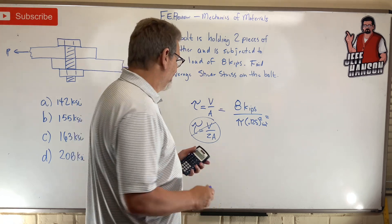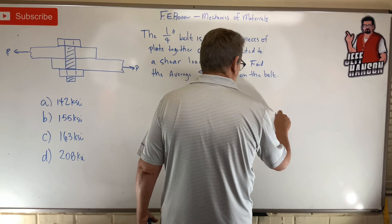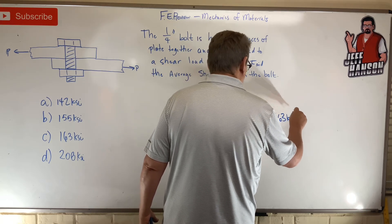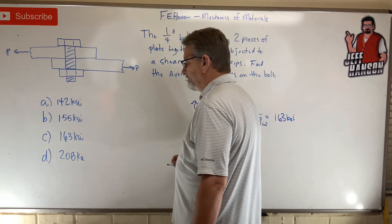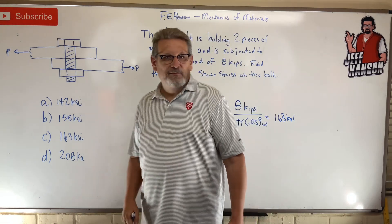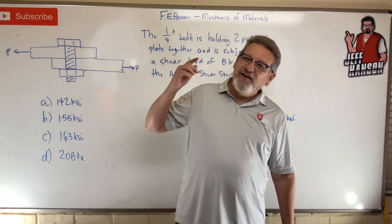162.97, which is Spanish for 163 KSI. Is that an answer choice? Ha ha, answer C. Let's go. Okay, see you next problem.